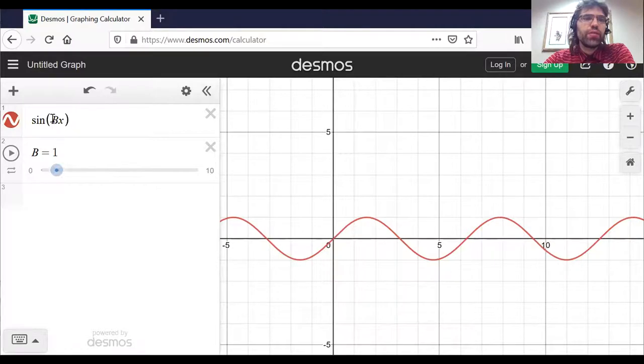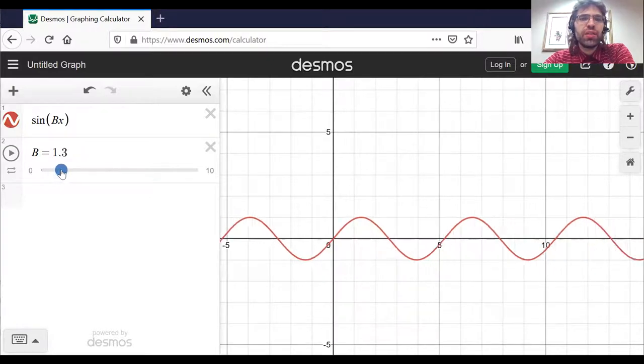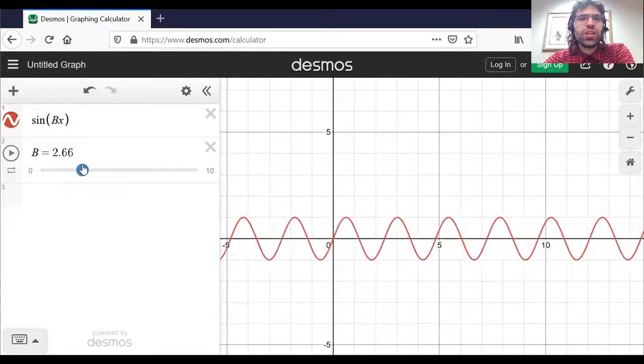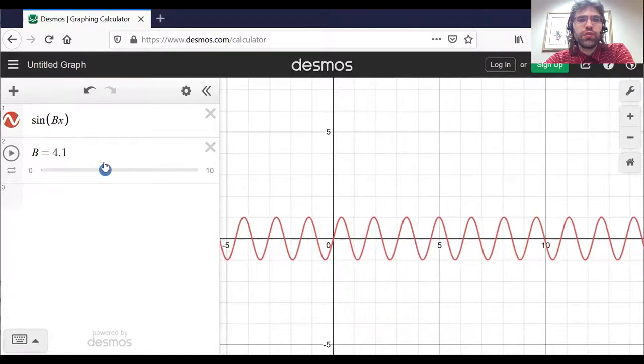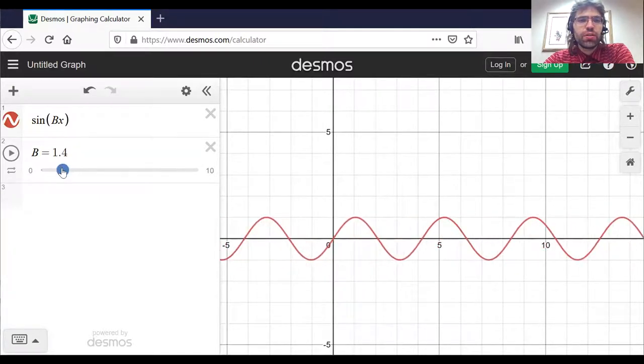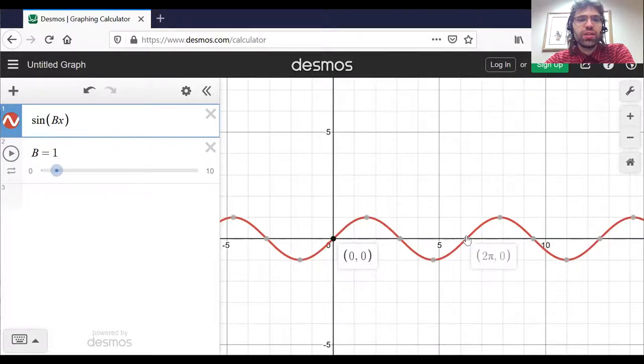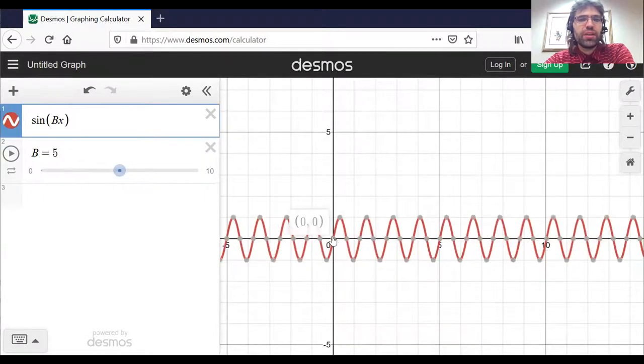Here's the sine of bx. Currently, b is one. And if we let b increase, that's decreasing the period. The period is the distance between this point and that point. And when b increases, you see that distance shrinks.